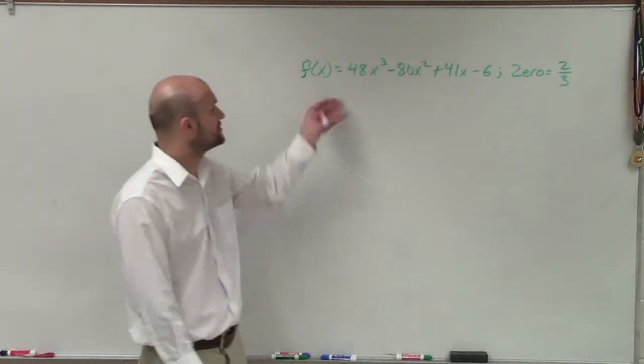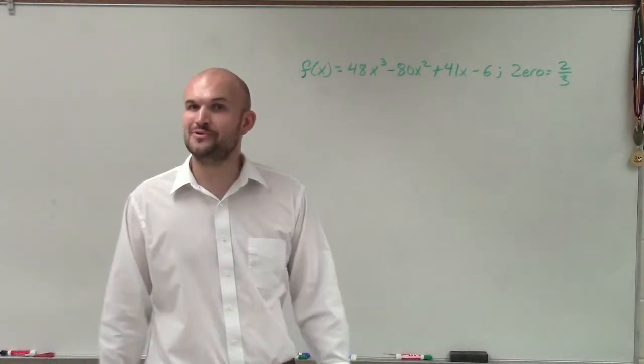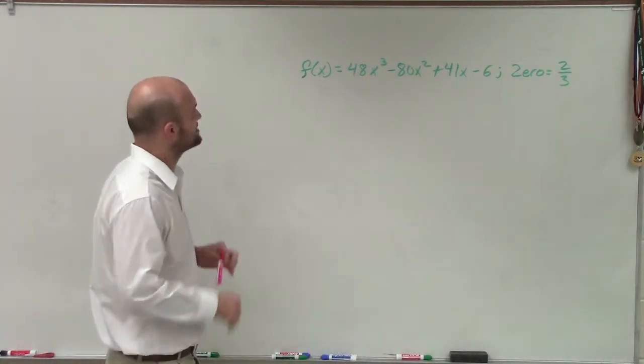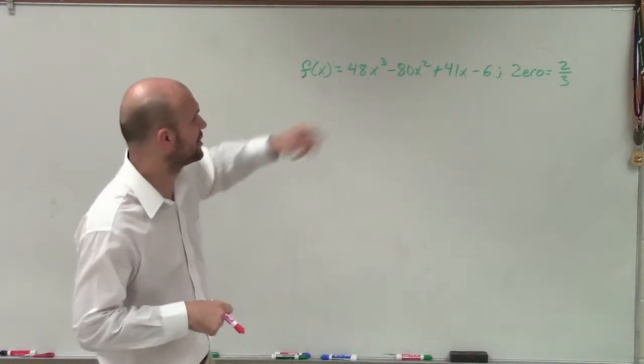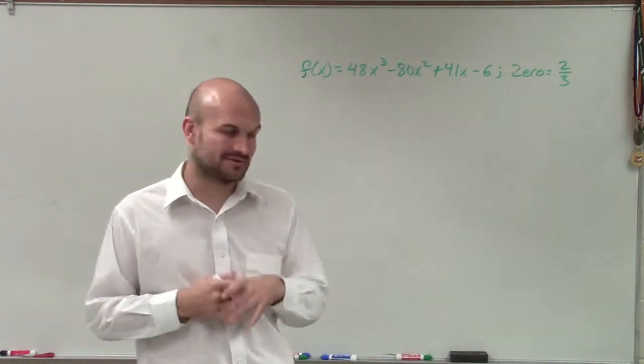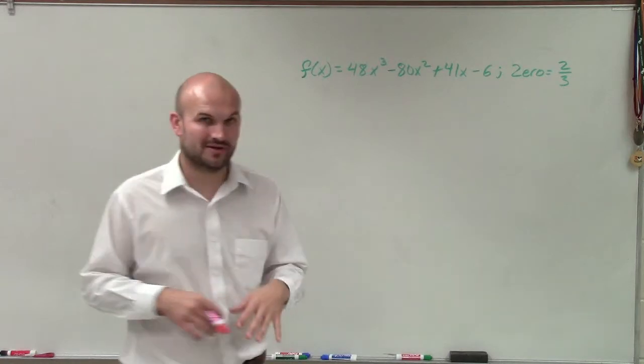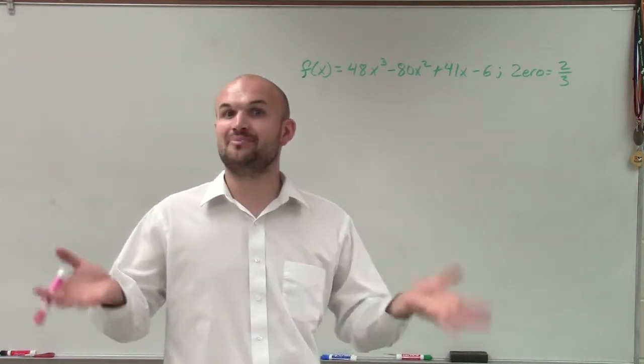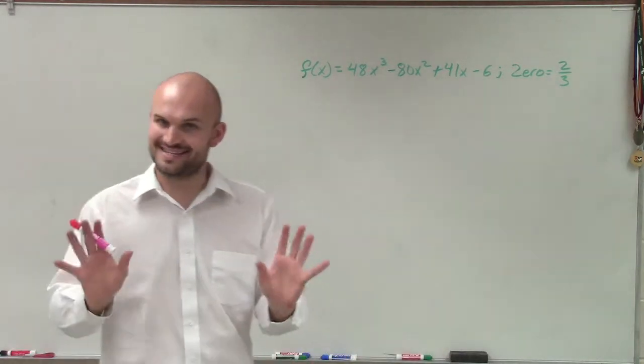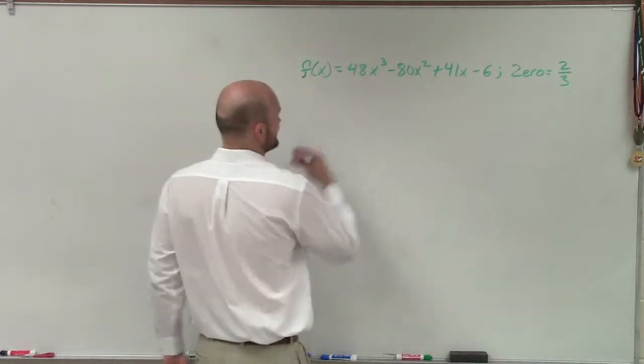Welcome. So what I'm going to do here is I'm given a zero of two-thirds, and what I want to do is now determine the remaining zeros. So when given a zero of two-thirds, that's perfectly okay. We're going to apply synthetic division for this, and everything's going to be all right.